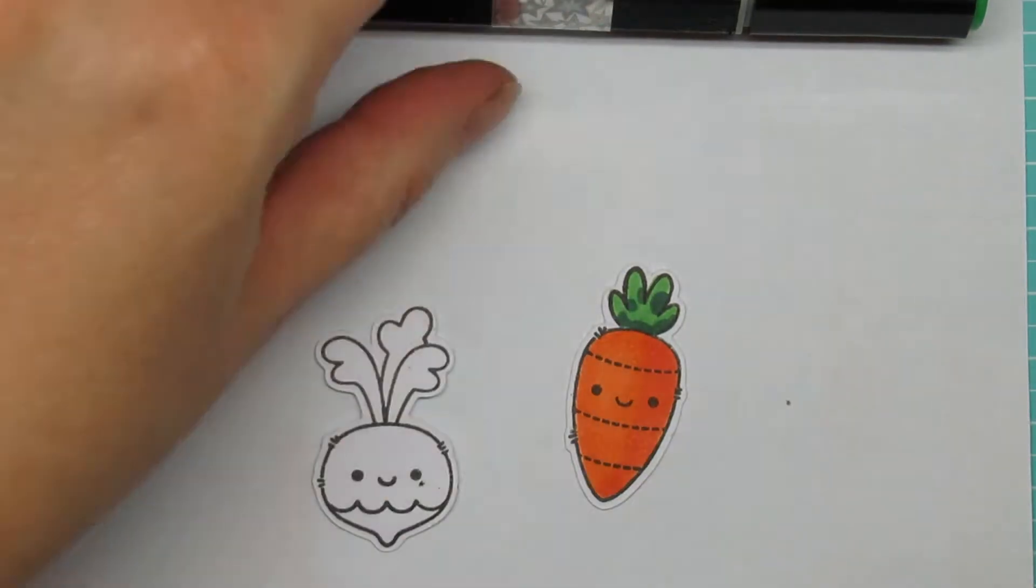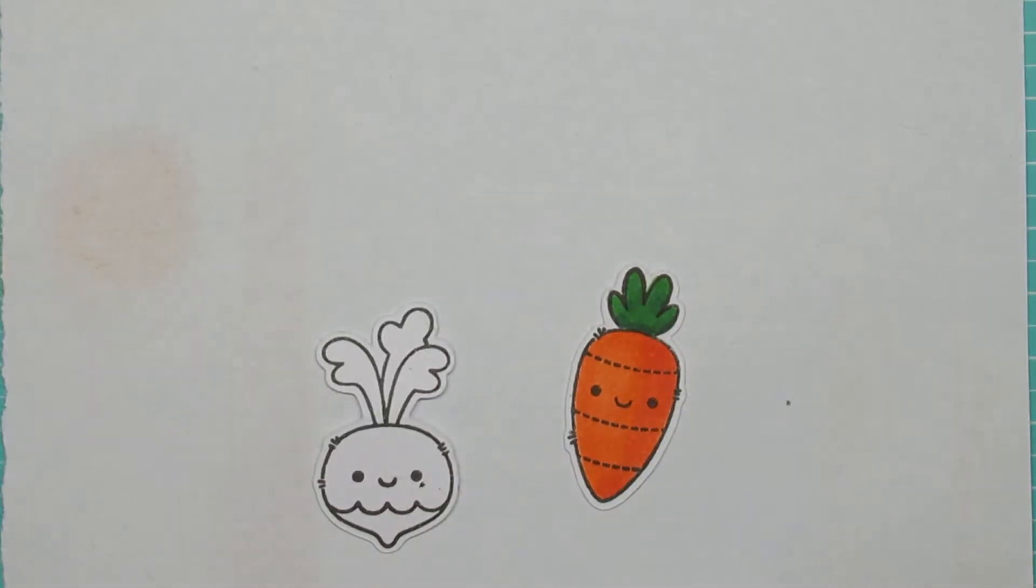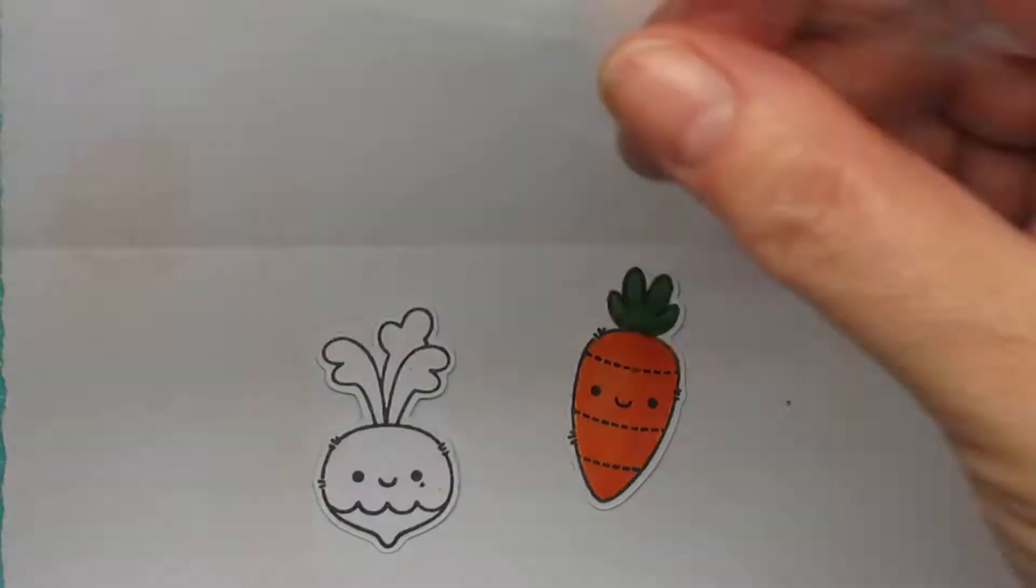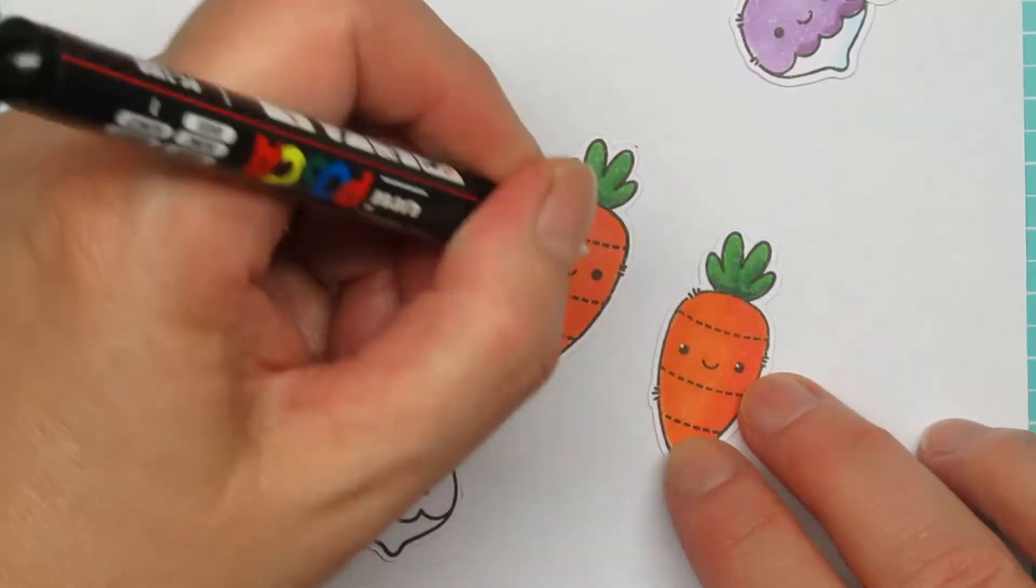I'm coloring with all the markers I have - Spectrum Noir, Copic, and Graphite markers - and I did the rest off screen but I colored them all the same. I just forgot to do the little eyes here.